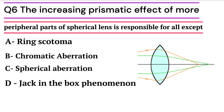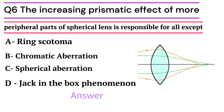The increasing prismatic effect of more peripheral parts of a spherical lens is responsible for all except: Option A - ring scotoma, Option B - chromatic aberration, Option C - spherical aberration, Option D - jack-in-the-box phenomenon. The correct answer is Option B: chromatic aberration.